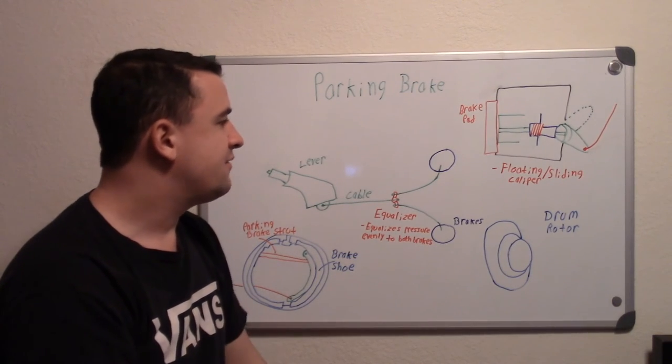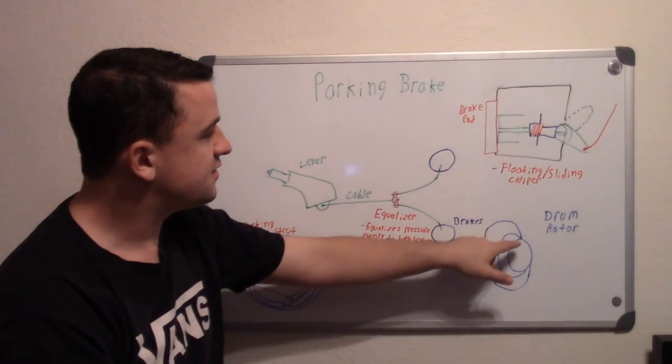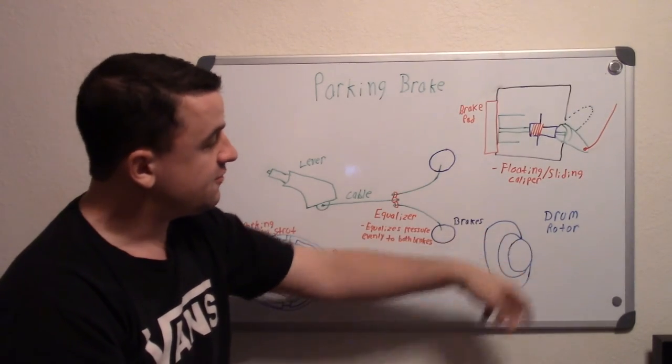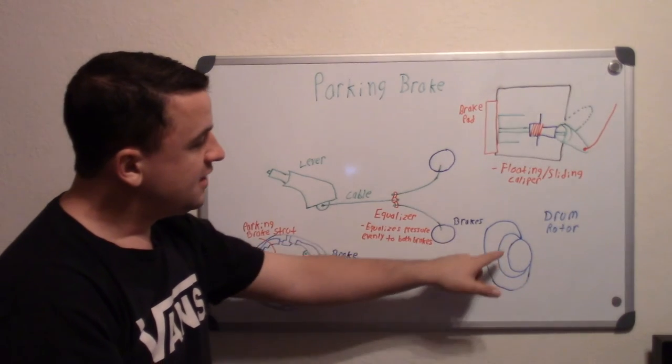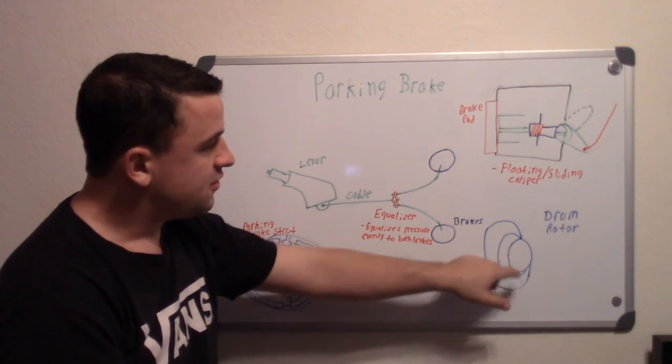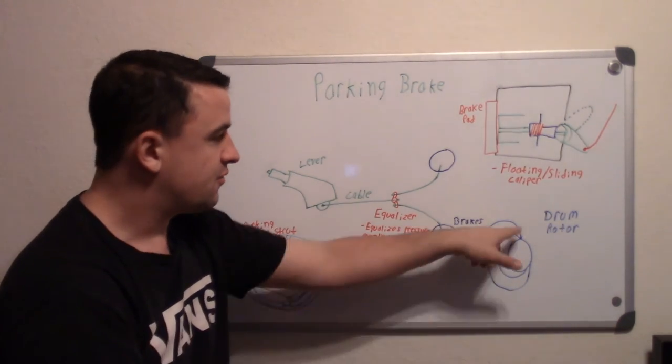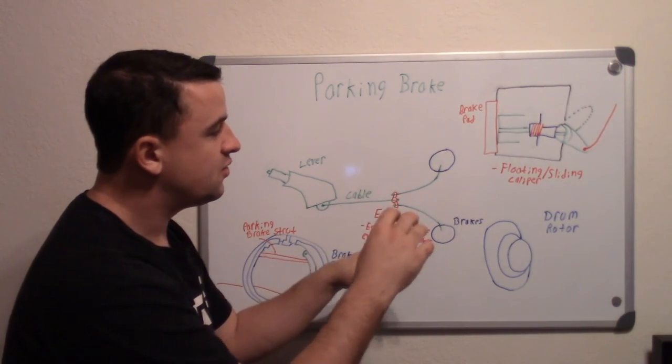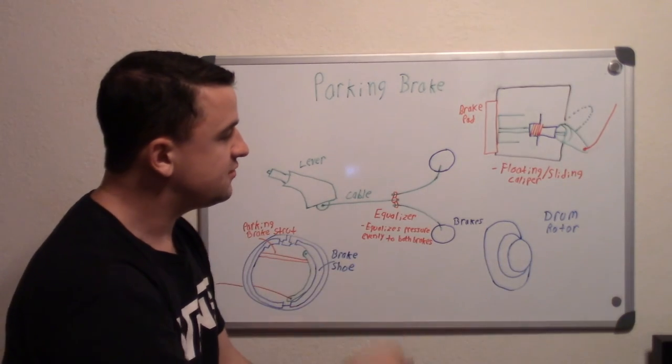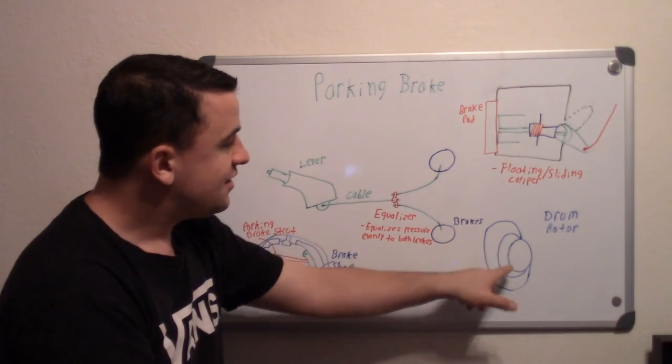If you have a fixed caliper, a lot of times what they have is basically a drum rotor where on the outside you have the rotor itself, then on the inside, that's part of the rotor. It's almost like putting a drum over a rotor. So you have your flat rotor, and on top of it here where the wheel hub goes, inside of there...